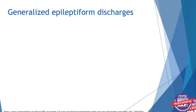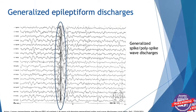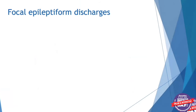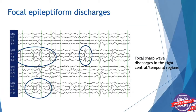Here's an example of generalized epileptiform discharges. Just about in the middle of the page, there's an interruption of the background with very high voltage activity seen in every single line equally — these are generalized spike and polyspike wave discharges. Focal epileptiform discharges can also be seen; in this example, high voltage spiky waveforms stand out from the background, corresponding to focal sharp wave discharges in the right central and temporal regions of the brain.